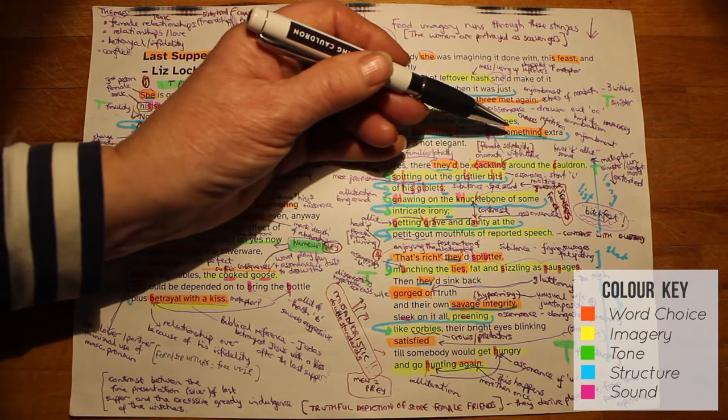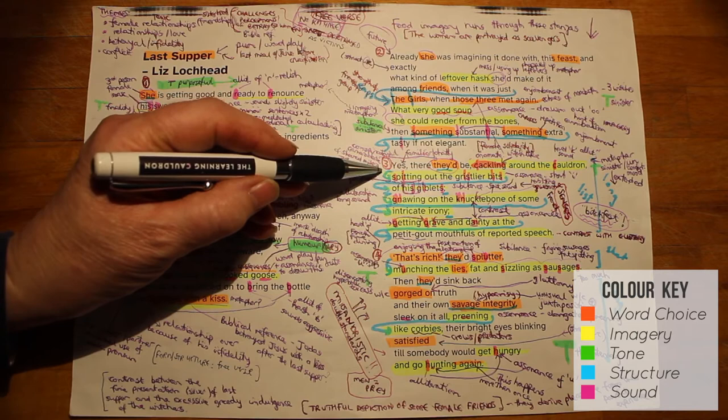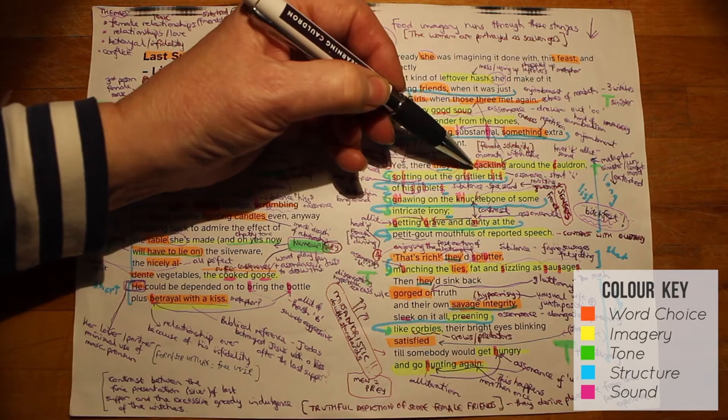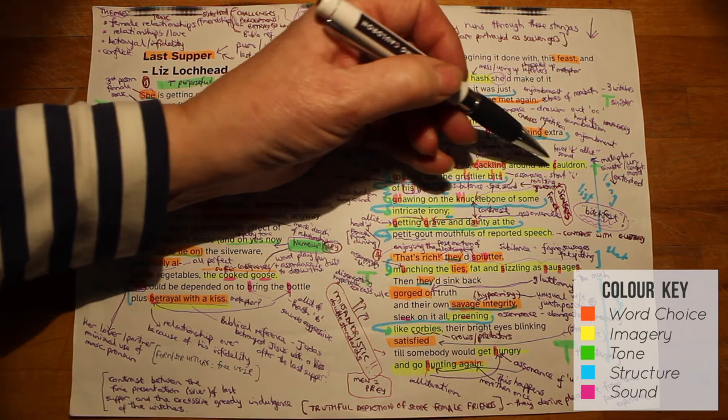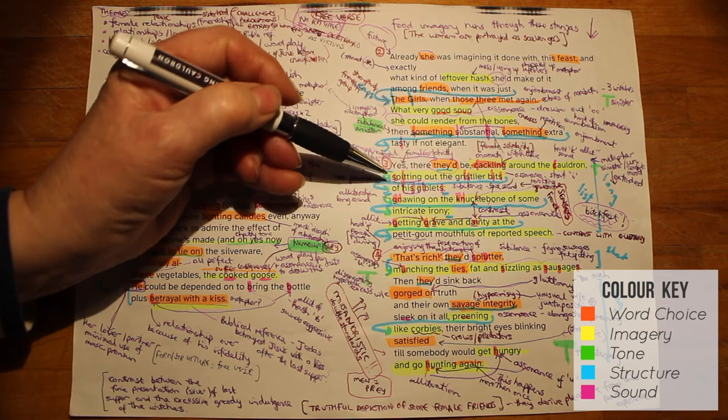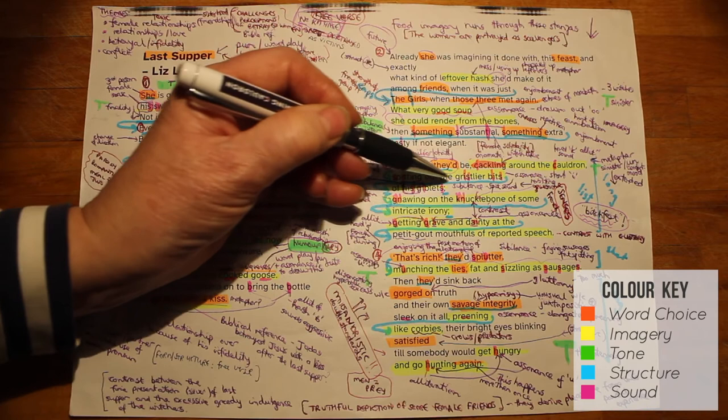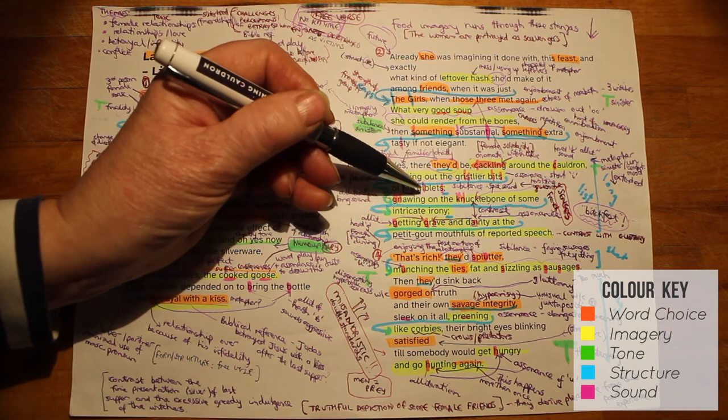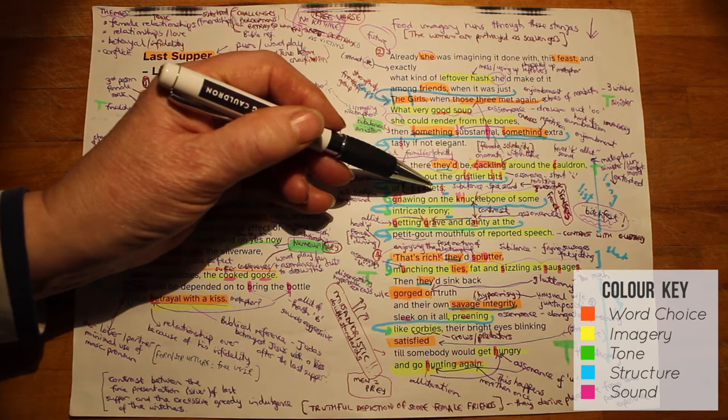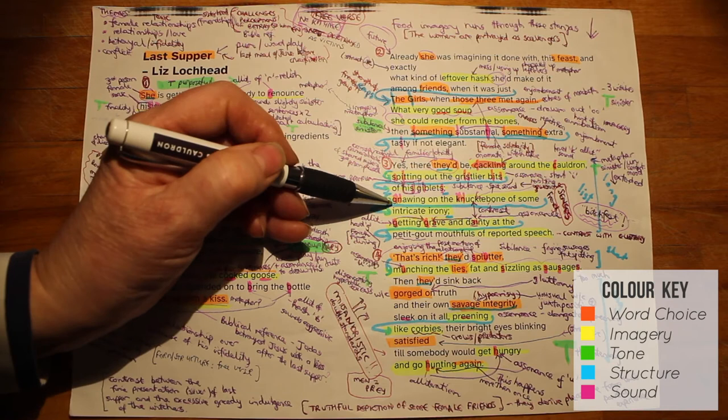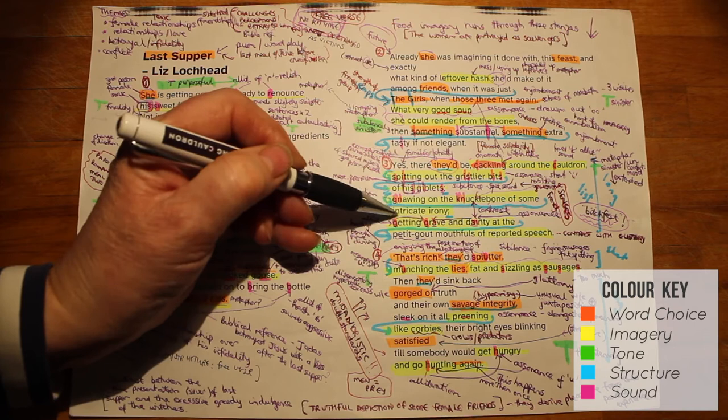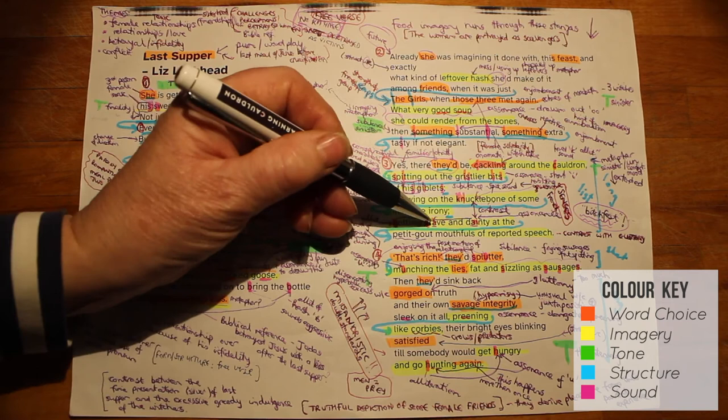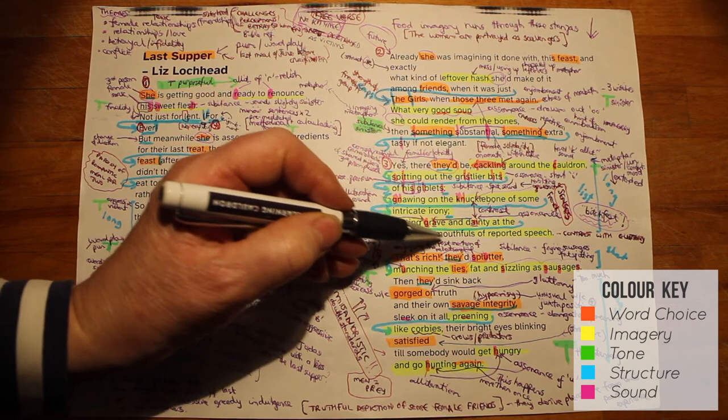One of the main things to note about stanza three is that it is full of sound techniques. I'll just nip through those first before we look at the other aspects, because there's a lot of imagery as well. So we've got the onomatopoeic sound of cackling, and then that's emphasized by the alliteration of cackling around the cauldron. Once again, harking back to the idea of them being like witches and something sinister. And that sinister tone is definitely helped by the sibilance here, spitting out the grislier bits of his giblets. And it's added to, in fact, by the assonance of the short ih sounds, spitting and grislier bits and his and giblets. So there's a lot you could say about that, just in general, about how it helps to create a sinister tone and really makes us feel quite uncomfortable about the behaviour of the persona in the poem and her friends. The sound continues with the repeated n sound in gnawing on the knuckle bone of some intricate irony. And then more alliteration again, getting grave. And then the a sound here, assonance, grave and dainty. At the petit goo, we'll come back to that in a second, mouthfuls of reported speech. So lots of sound there.